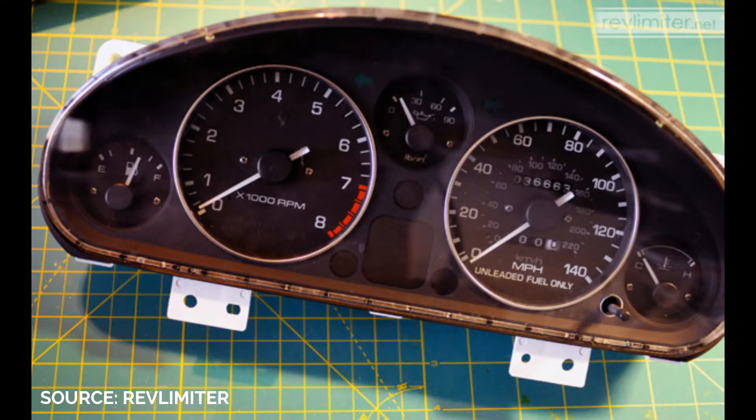Take your old instrument cluster and carefully remove the black bezel from the white housing. There are some tabs involved, so use a flathead if necessary. From there, you can remove the gauges using an upward motion.